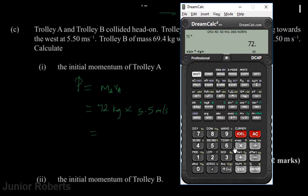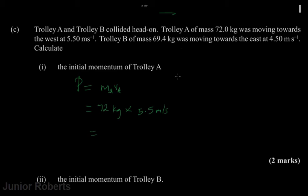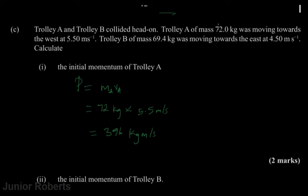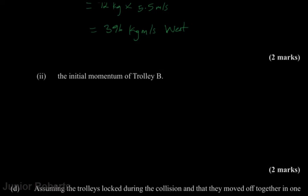72 multiplied by 5.5 gives us an answer of 396 kilogram meters per second. Since Trolley A was moving towards the west and momentum is a vector quantity, the magnitude is 396 kg·m/s and the direction is to the west.